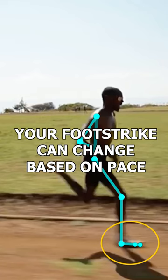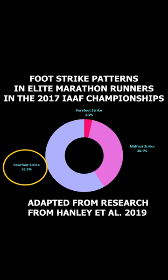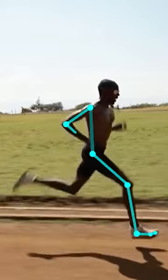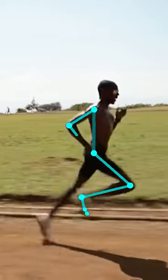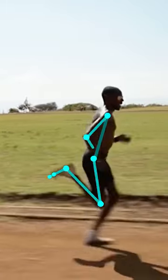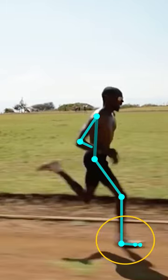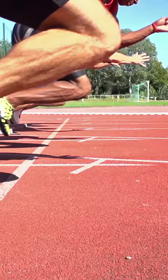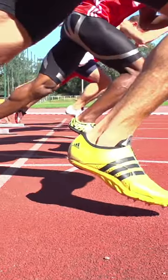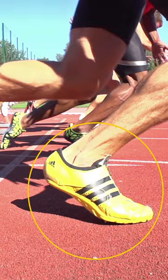When running relatively long distances, plenty of elite runners adopt more of a rear foot strike. However, when running shorter distances, they may adopt more of a mid foot strike. Then, when sprinting, they may adopt more of a forefoot strike.